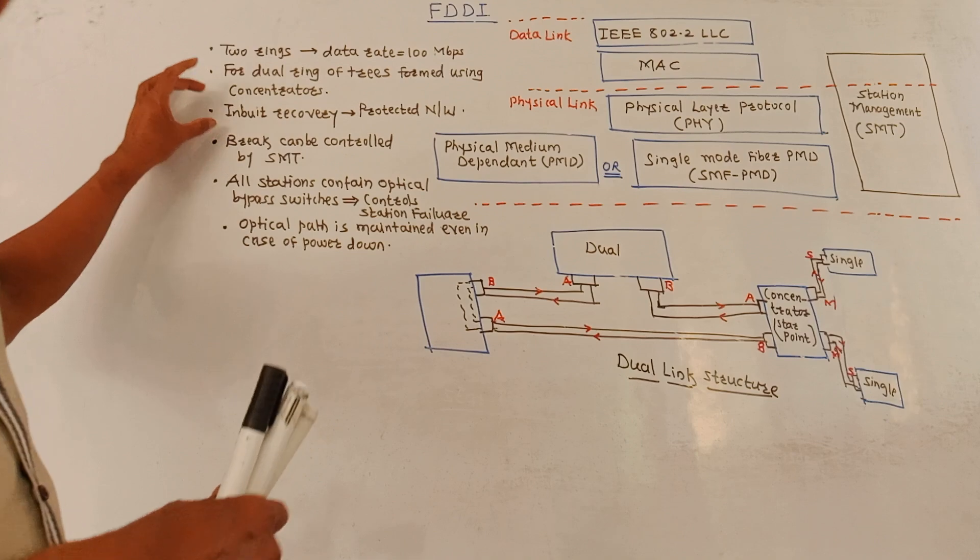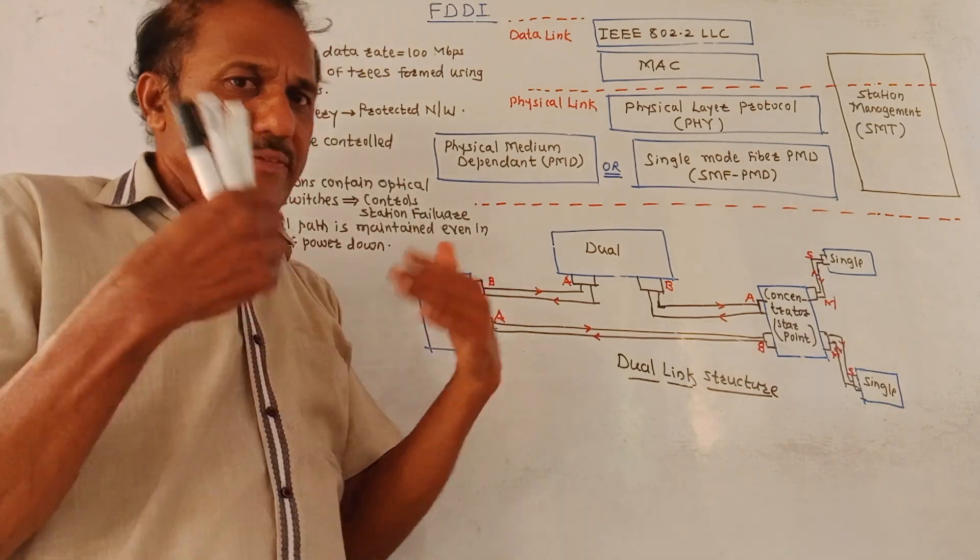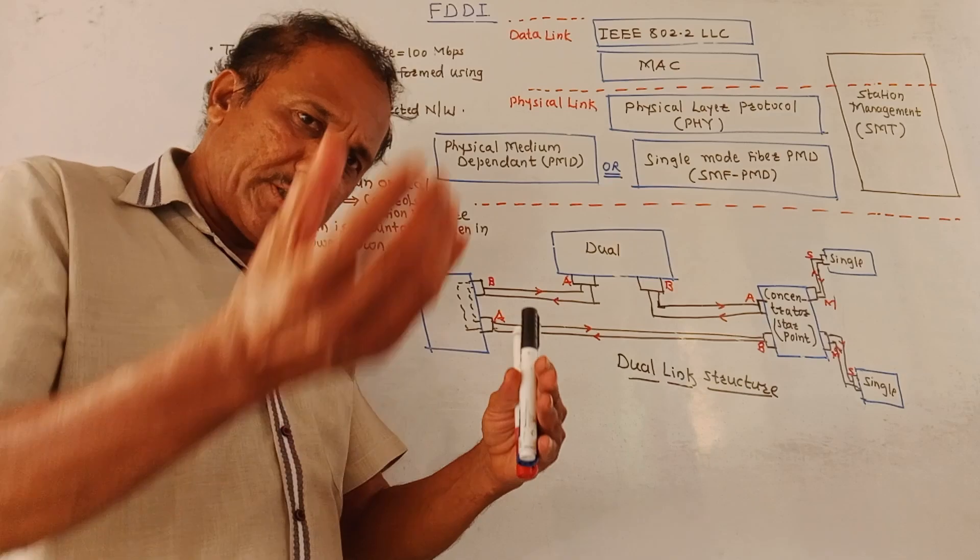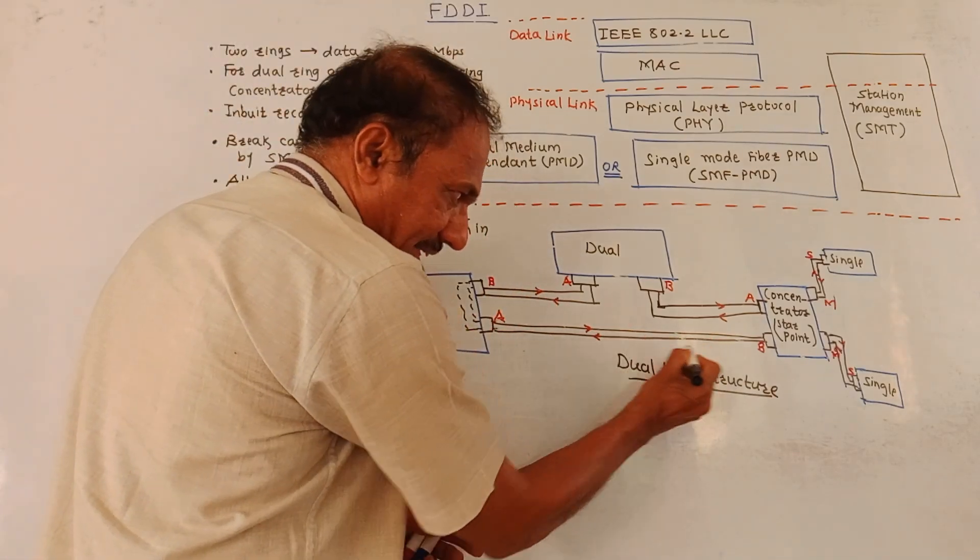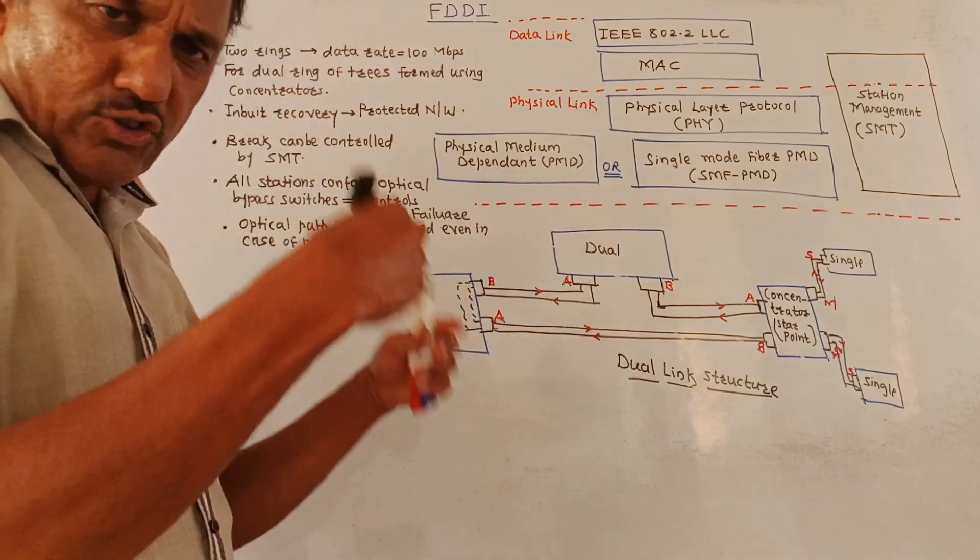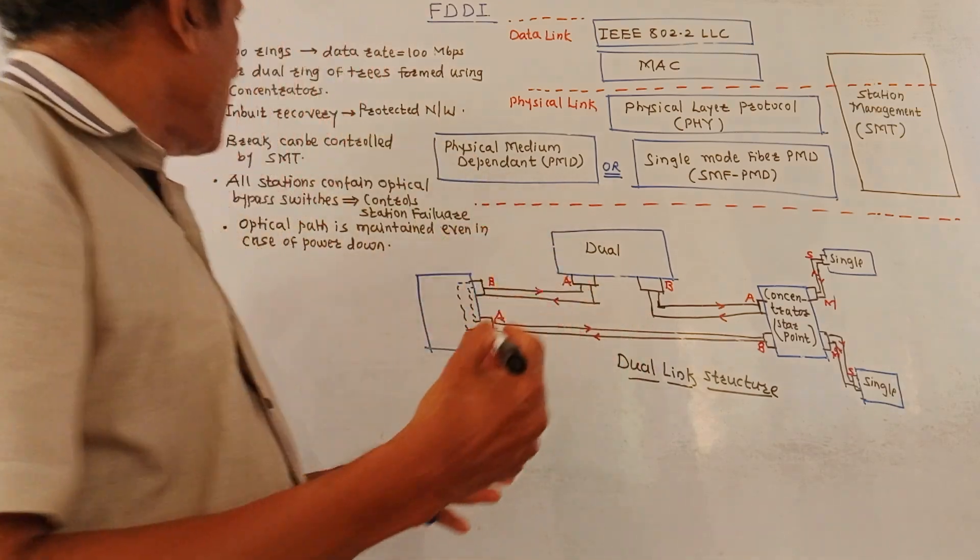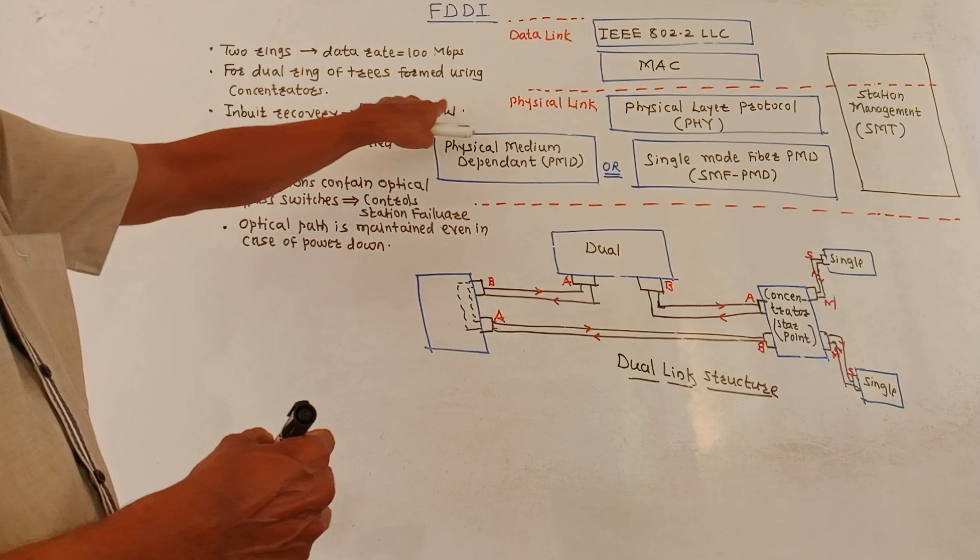Then it has an inbuilt recovery system. Even if there is a failure, then the transmission takes place through the secondary ring. This is the primary ring, this one is secondary ring. In case of a failure of a system, you are getting the protection. So, it is a protected network.